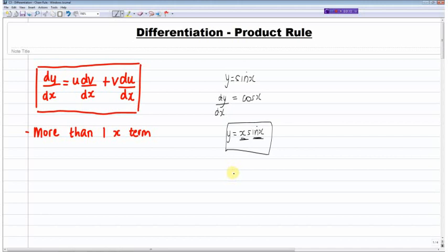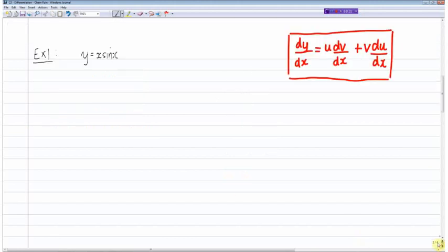Okay, so I'll do a couple of examples just to make sure that it does make sense and you're confident enough to know when to use the product rule. So, the first example I have is y equals x sine x. Here we've got the product of two x terms, x and sine x. So in this case we would use the product rule.